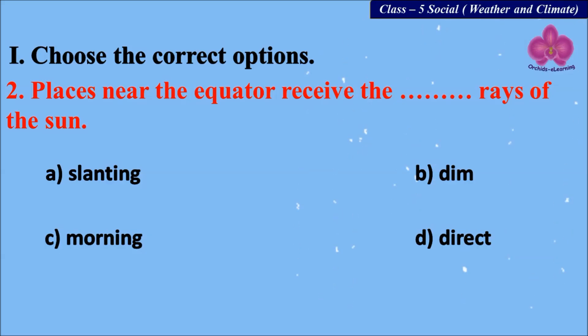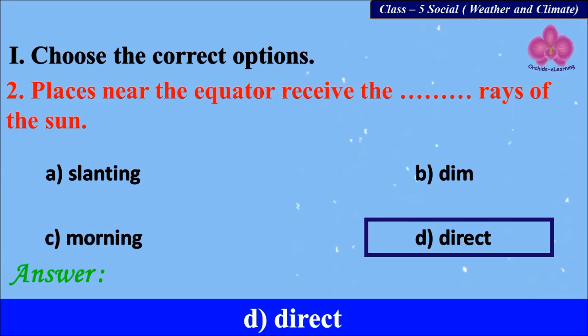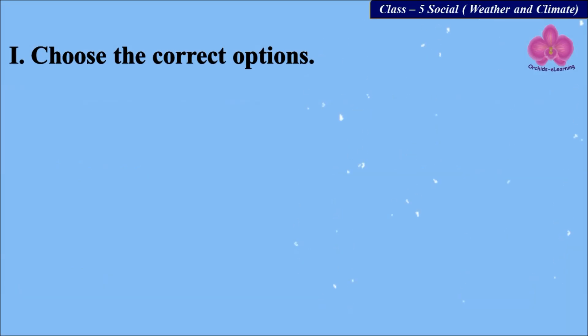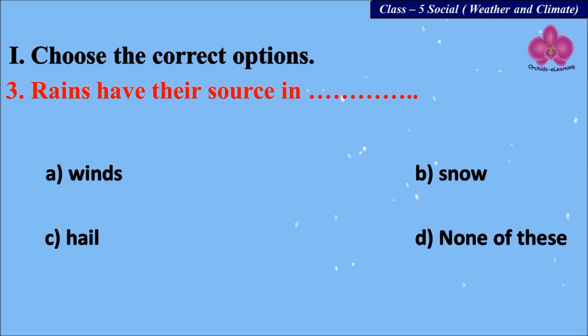Next: places near the equator receive the dash rays of the sun. Options are: slanting, beam, morning, and direct. Think about your answer. Next: rains have their source in dash — A) winds, B) snow, C) hail, and D) none of these.